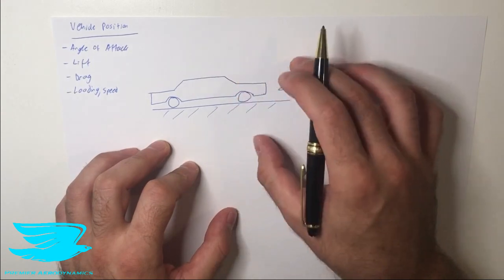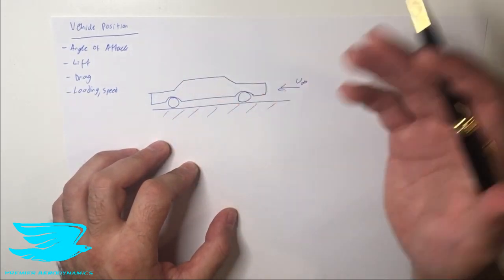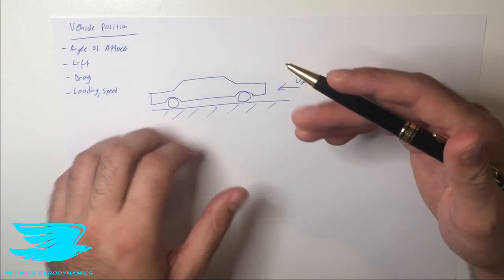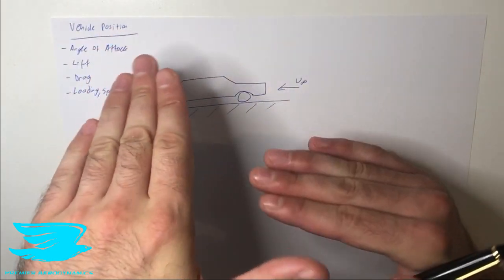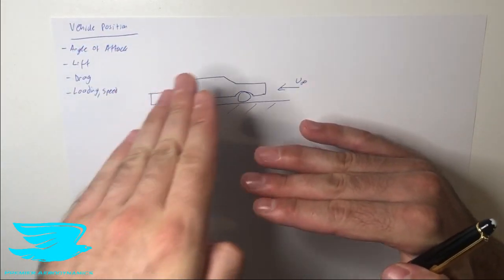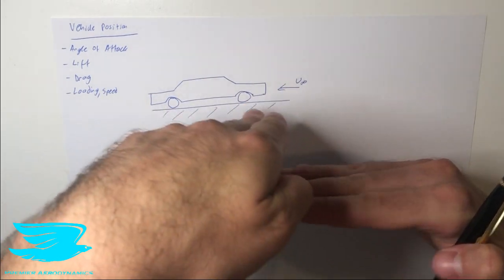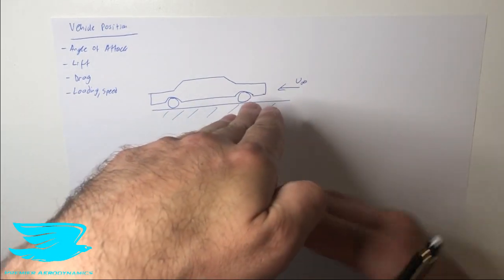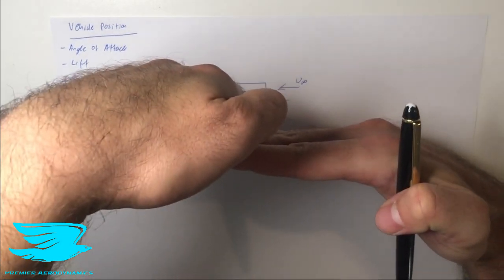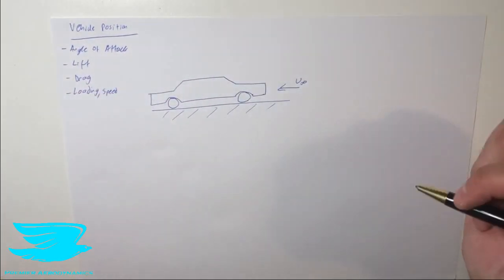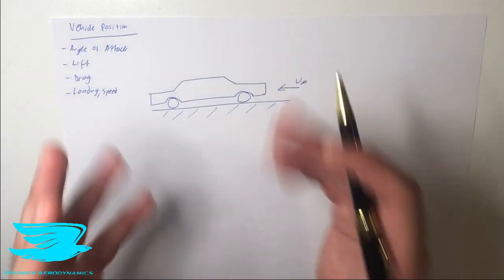Now we have the car and we have something called the angle of attack. This is the angle at which any object is flying or hitting the air at. So if you have an object like this and it's coming towards the air, there's a bit of an angle between these two sections. That is the angle of attack and there is no difference for a car.